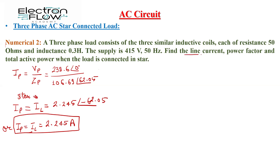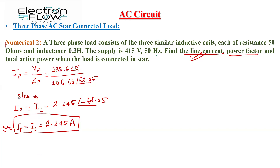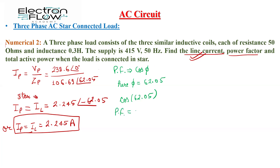We have calculated the line current. Next, the question asks us to calculate the power factor. Power factor is cos phi, where phi is 62.05 degrees. So cos(62.05°) = 0.468 lagging.